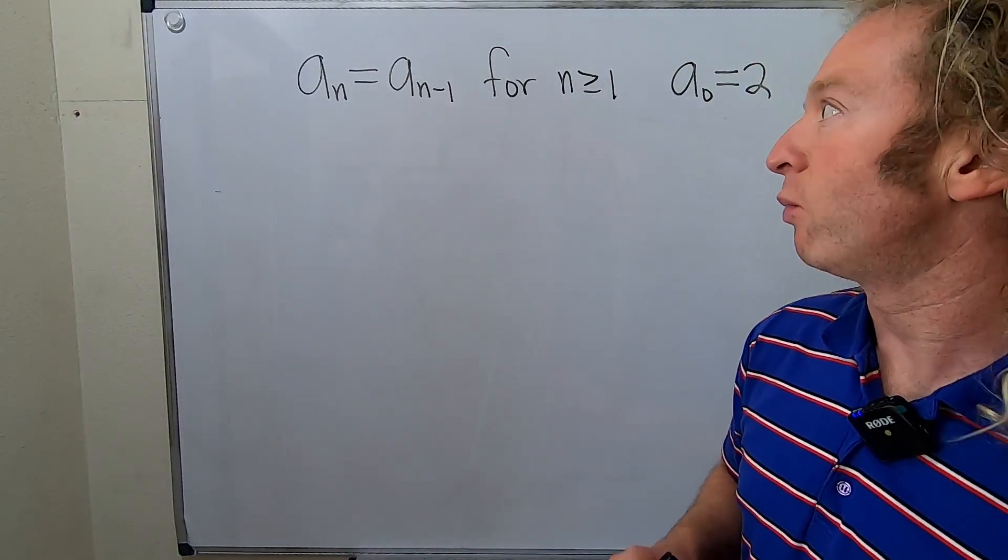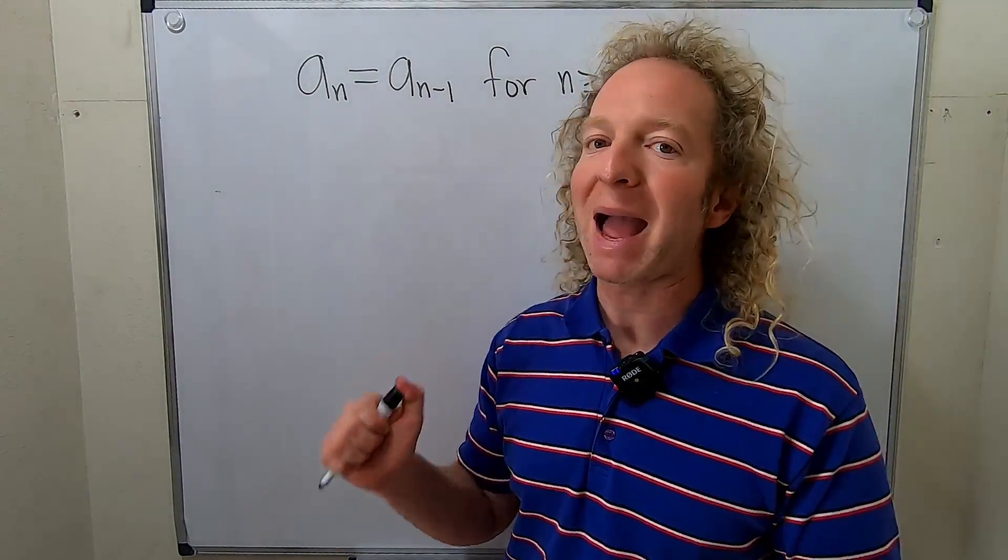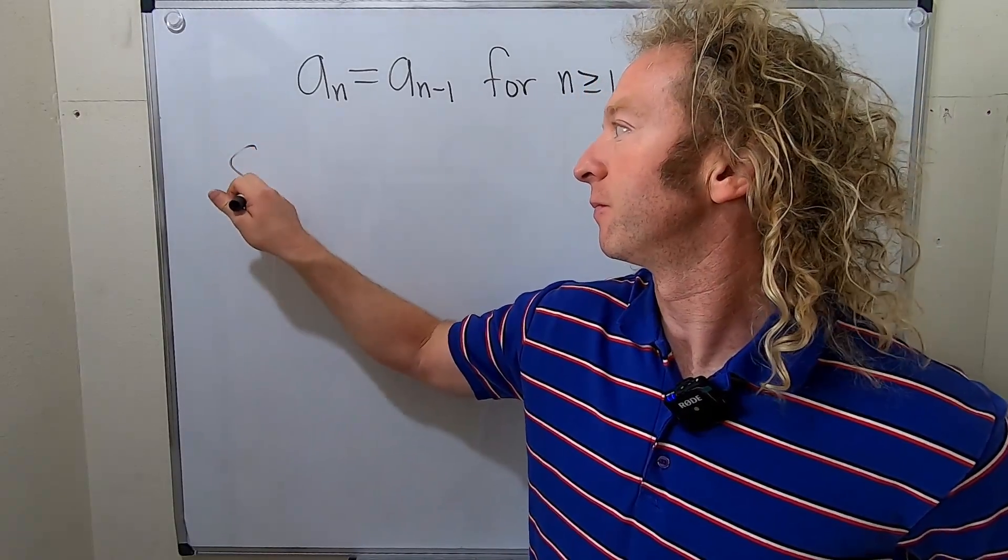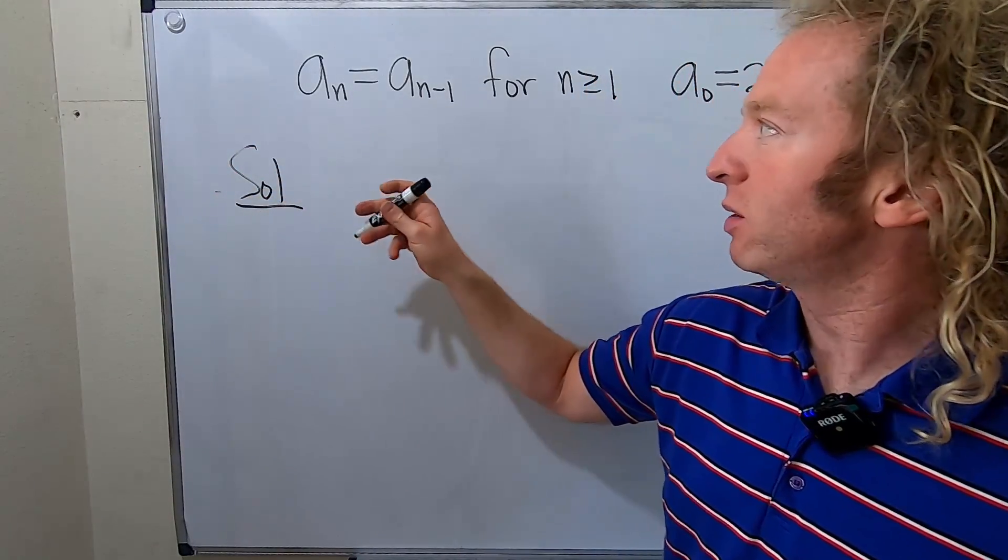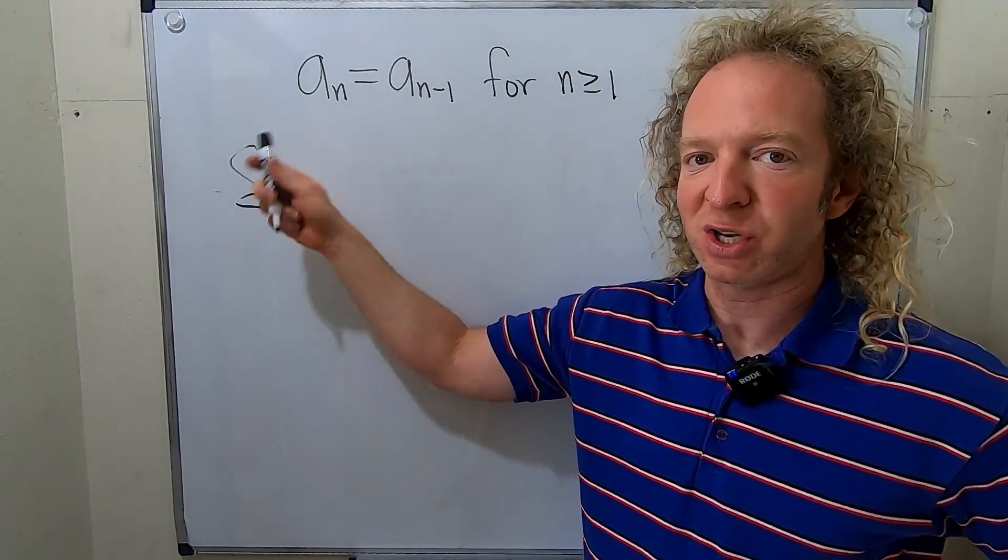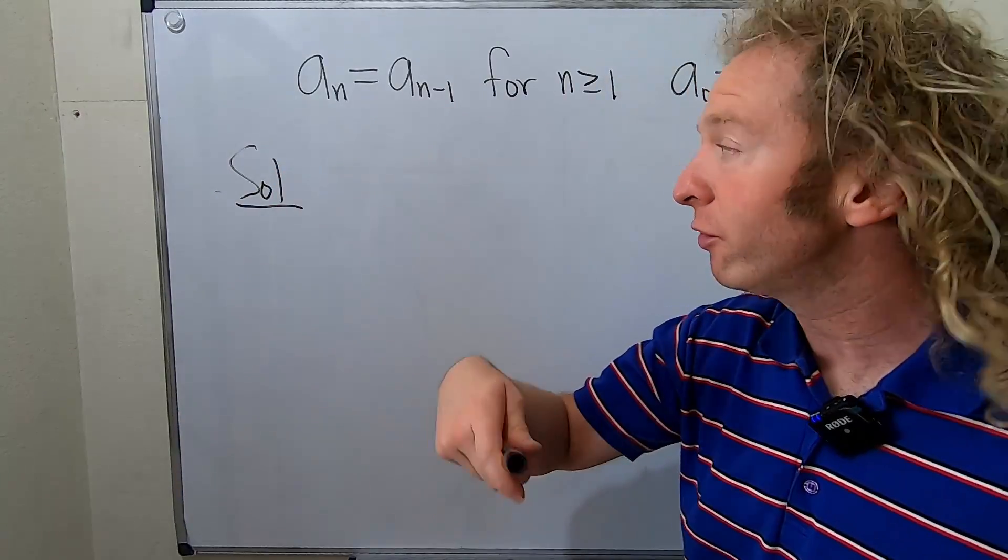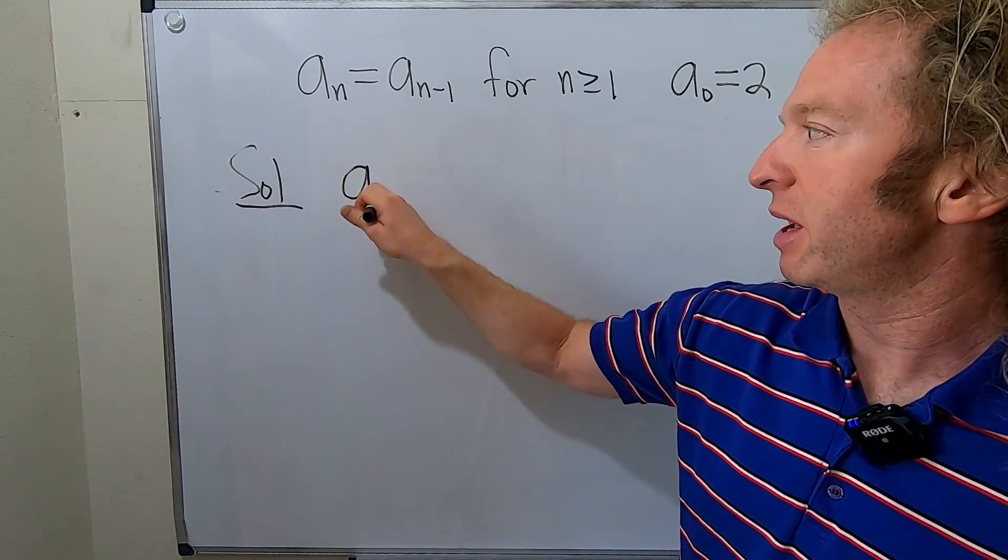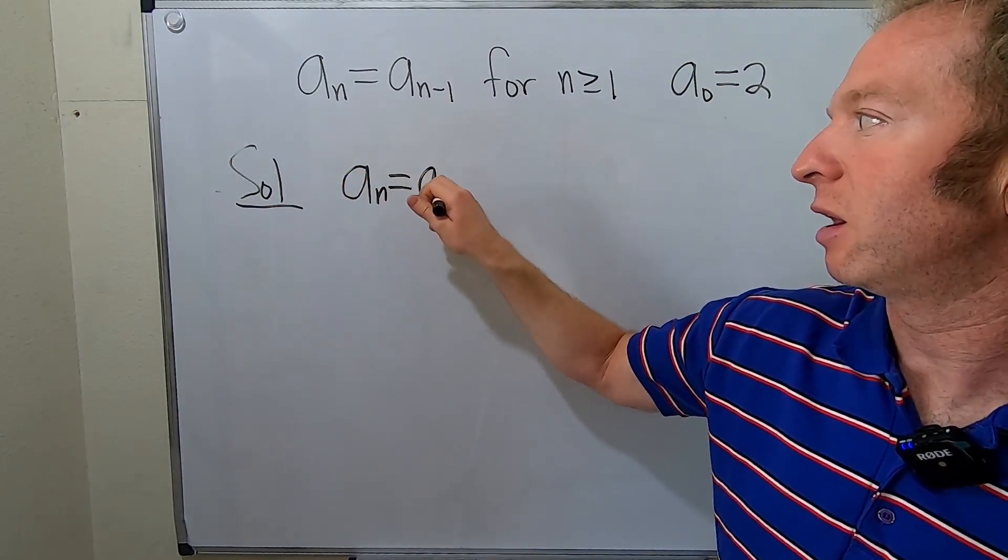Let's go ahead and work through this one, and we're going to use something called backtracking. How backtracking works is you basically use your equation and you keep using it over and over. So a sub n is equal to a sub n minus one.